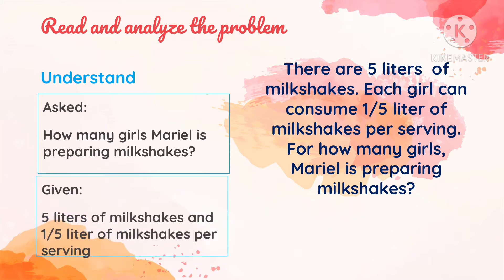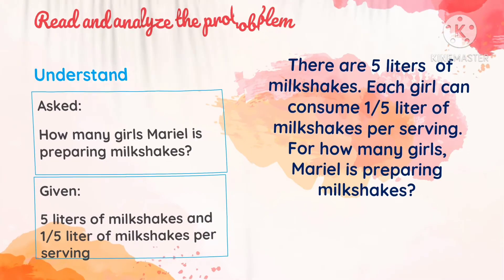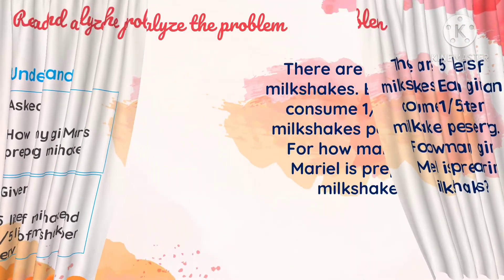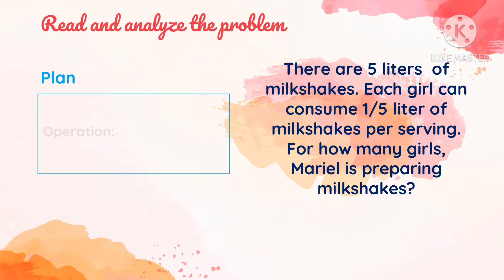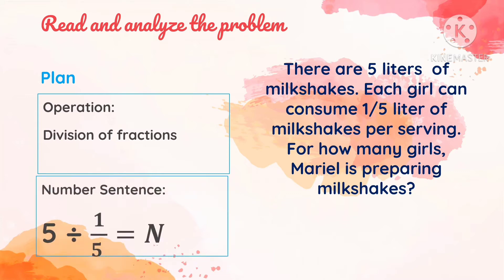The given numbers are five liters of milkshakes and one-fifth liter of milkshakes per serving. The second step is to plan. The operation we're going to use is division of fractions, and the number sentence will be 5 divided by one-fifth is equal to n.